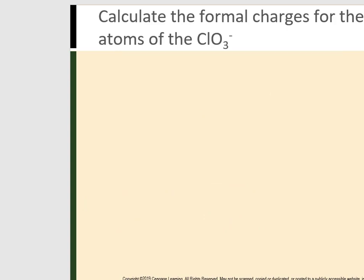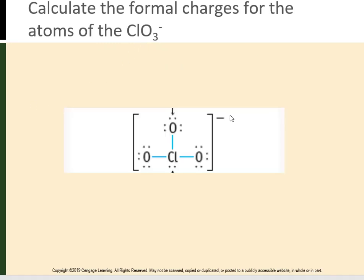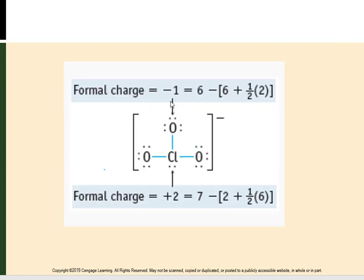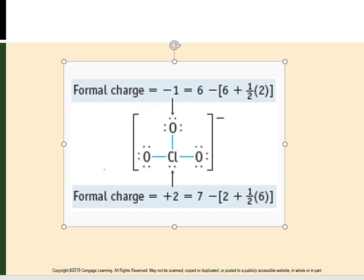Now calculate the formal charges for the atoms of ClO₃⁻. For each oxygen: 6 valence electrons minus 6 lone pair electrons, plus half of 2 bonded electrons (1 bond each), gives 6 + 1 = 7. So 6 minus 7 means each oxygen has a formal charge of −1.